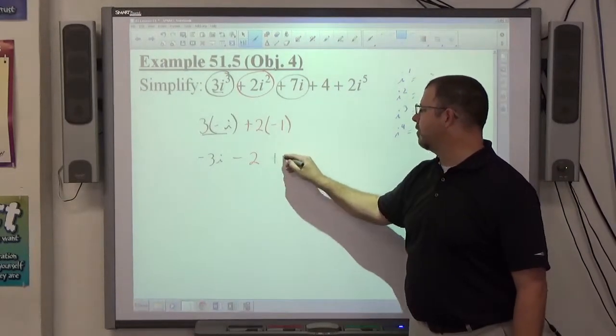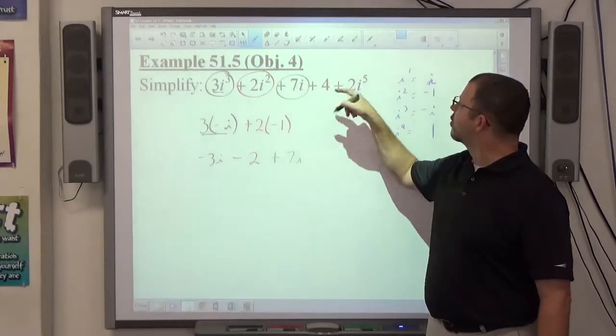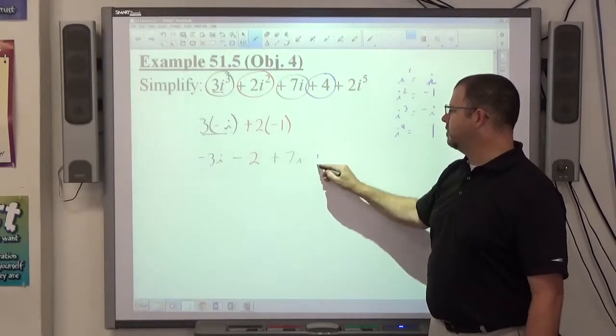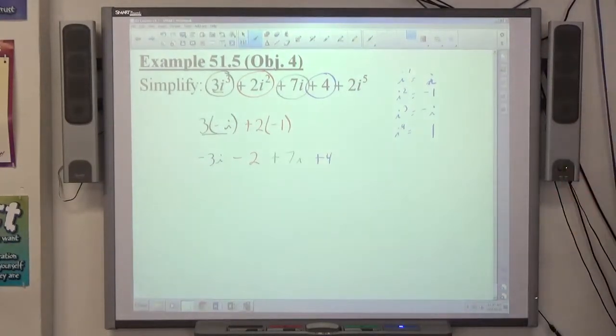Next one's plus 7i, which is perfectly fine. i to the first power is great. Real numbers are great. So the green and the blue there both are exactly what they need to be.